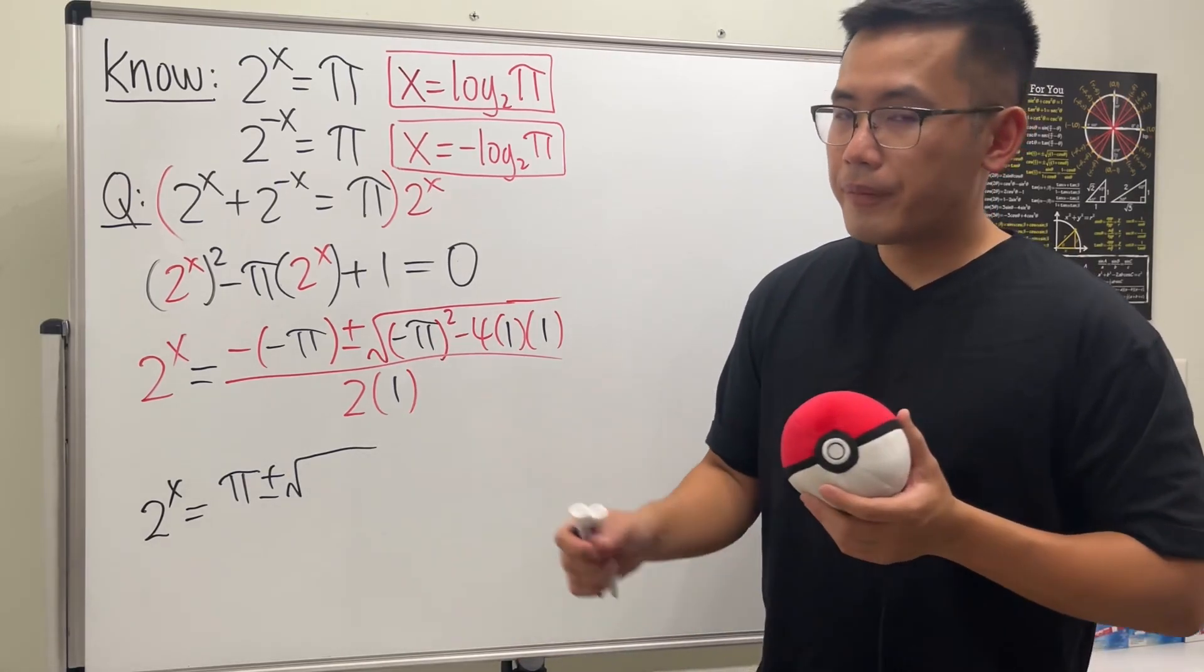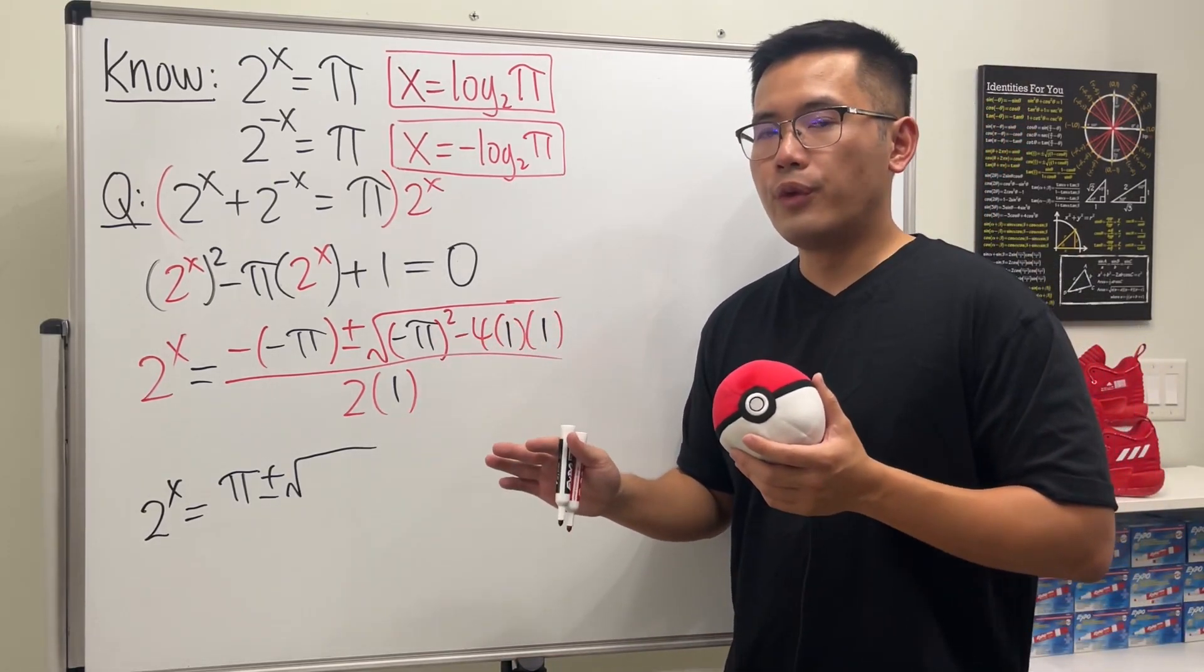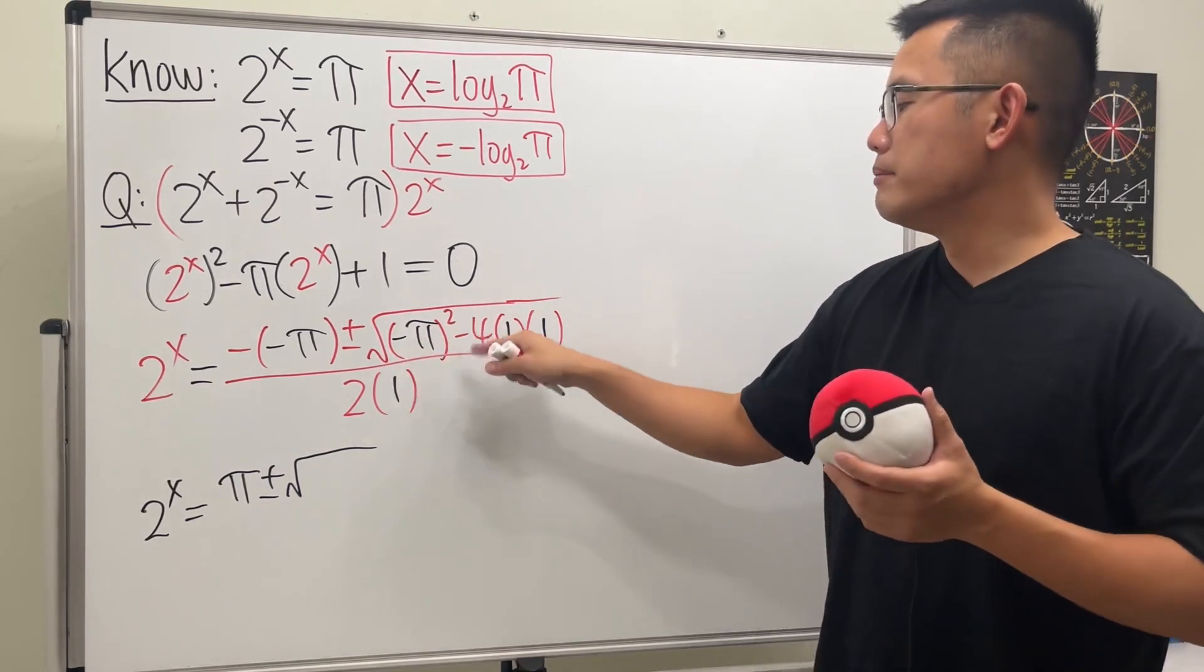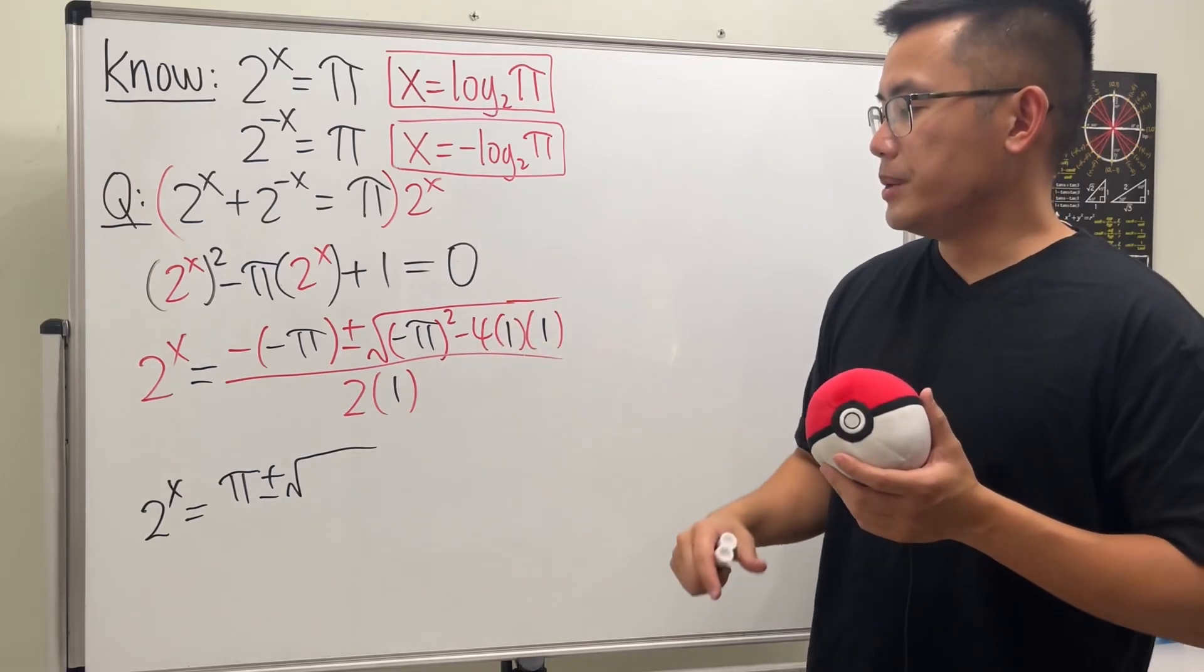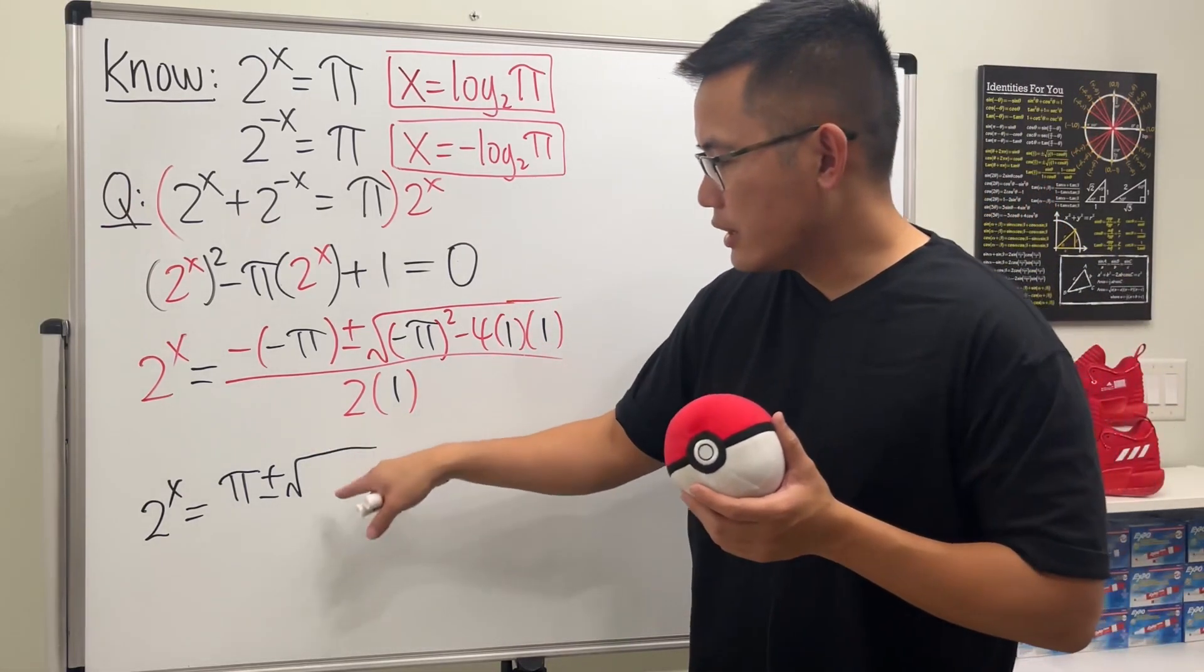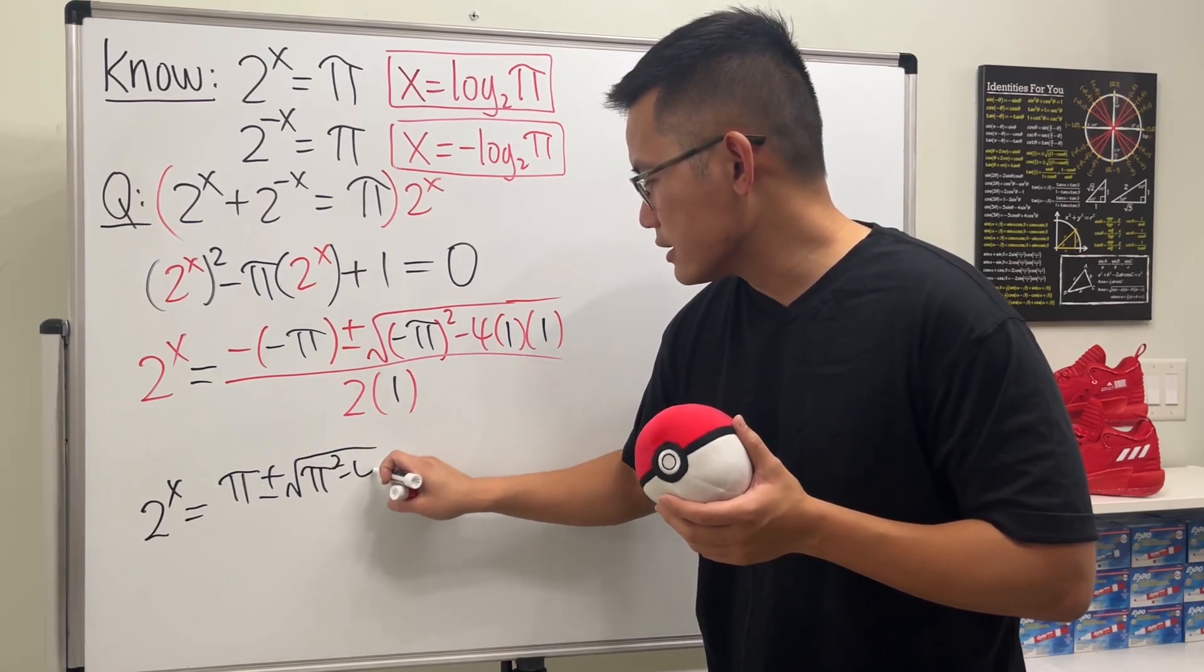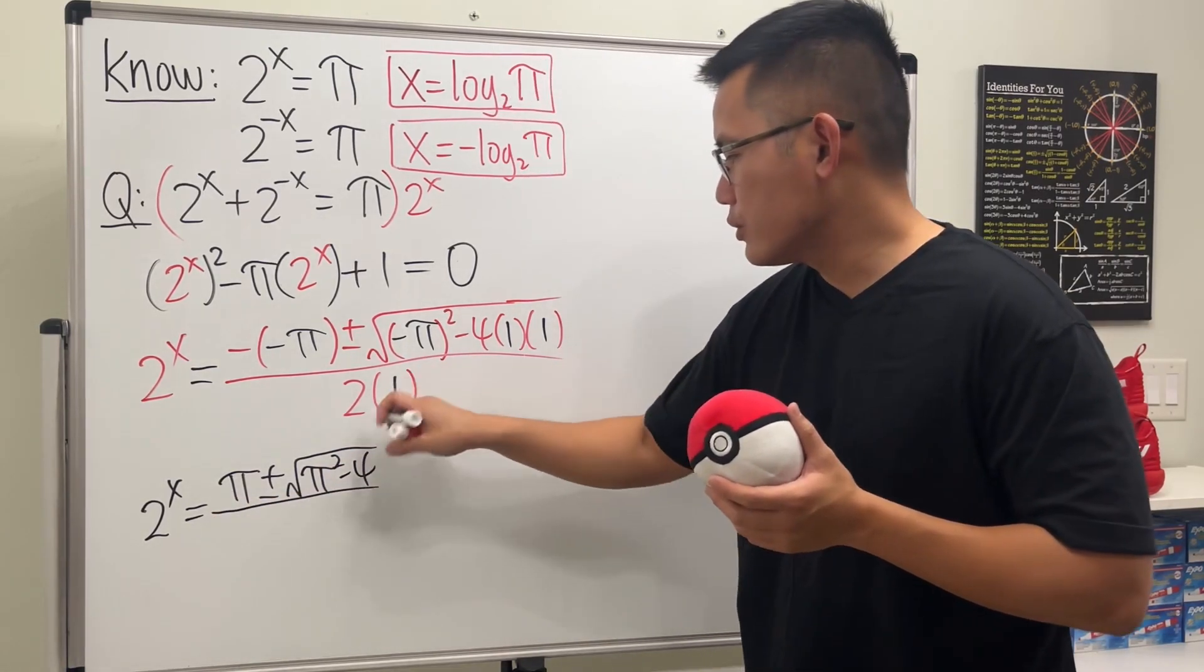Okay, first notice, though, pi is about 3.14-ish. So when you square that, you are going to get about 9 point something, right? And it's positive. Minus 4, the inside is going to be positive. So we will actually get a real number here, and we will have the pi squared minus 4 over 2 times 1, which is 2.